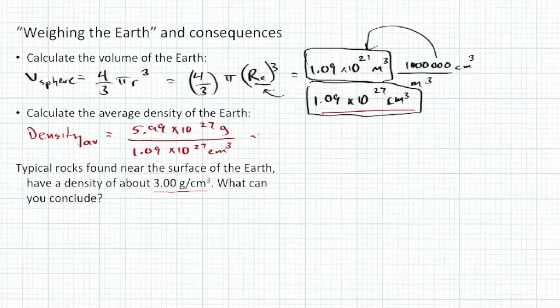5.99 times 10 to the 27th grams per how many centimeters cubed? 1.09 times 10 to the 27th cubic centimeters. So go ahead and just divide them. We can do sort of a shortcut here. We can just say well that cancels out, so it's simply 5.99 divided by 1.09. And what do you get? I get 5.5 grams per centimeter cubed, grams per cubic centimeter.